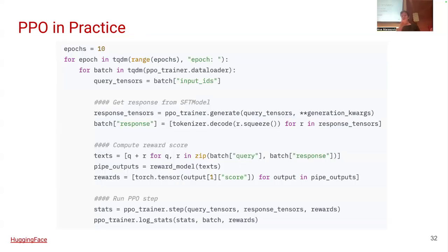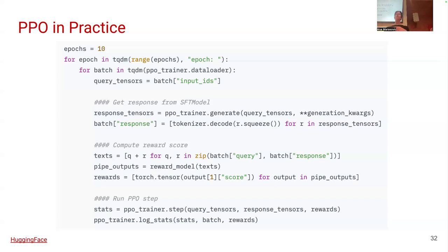There is a balance between maximizing the reward — being as good as the reward claims you can be — while also trying to stay close to what an unaligned model would say for the same prompt. HuggingFace provides a PPO trainer, so you don't need to implement everything from scratch. You have your batch of data, get responses from your SFT model, get a reward score from your reward model for each response, and call the PPO train step with your query tensors, response tensors, and rewards.